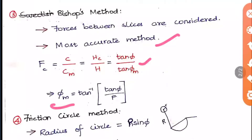The fourth method is the friction circle method. It is a simple method where a small circle of radius r and another circle of radius R sin φ are drawn. Using these, the normal and tangential reactions are calculated to determine the stability of the slope. The same slip circle based on rotational failure is used here.